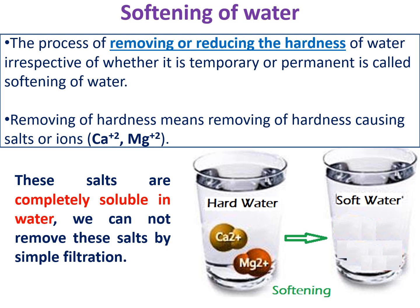So why is it difficult to remove calcium and magnesium salts? These are completely soluble in water. That's why we cannot remove these salts by easy methods like filtration. The basic principle in softening of water is: if you convert soluble salts into insoluble salts or precipitates, you can easily remove all hardness-causing salts. Converting hard water into soft water is called the softening method.